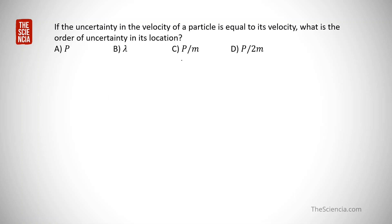The question is: if the uncertainty in the velocity of a particle is equal to its velocity, what is the order of uncertainty in its location? This is related to the uncertainty principle. The uncertainty relation is: delta x times delta p is greater than or equal to h-cross by 2, where h-cross is h by 2 pi.